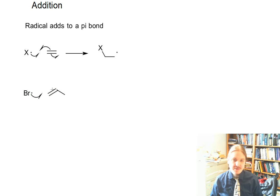Bromine radical is going to interact with the pi bond. One electron in the pi bond is going to be used to make the new carbon-bromine bond. The other electron in the pi bond is going to be used to make the radical on the other carbon. And that's going to look like this.